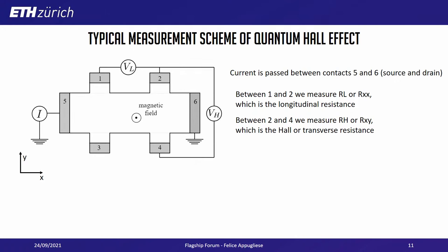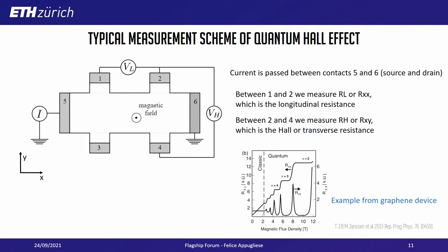This is how the quantum Hall effect is usually measured. We cut our 2DEG in the shape of a bar, place contacts so we can pass current inside, and measure the longitudinal voltage and resistance, also called R_L or R_xx. At the same time, we can measure the transverse voltage, also known as the Hall or transverse resistance. This is an example taken from a graphene device, but this can be done in normal quantum wells as well as in 2D materials.